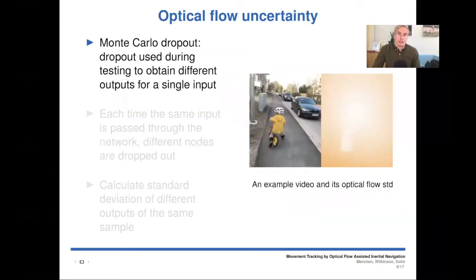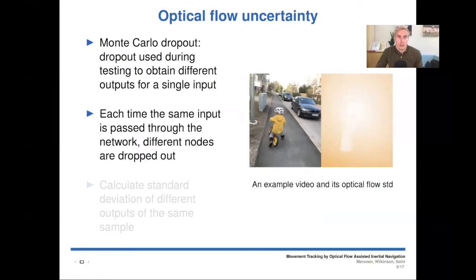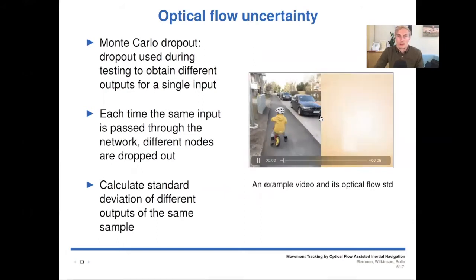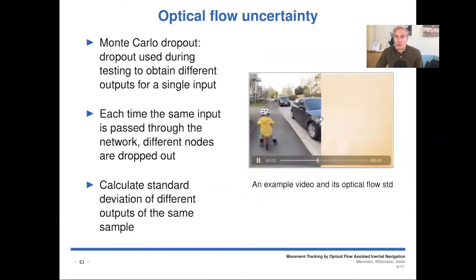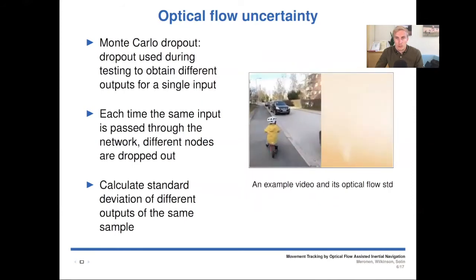We also want to get an uncertainty estimate for our optical flow, and we use Monte Carlo dropout for this. This means that dropout is used during testing to obtain different outputs for a single input. Each time the same input is passed through the network, different nodes are randomly dropped out in the network to get differing outputs. We can calculate standard deviation of these different outputs of the same sample to get an uncertainty estimate. Here an example video with its corresponding optical flow standard deviation is shown.